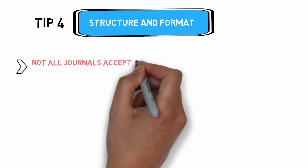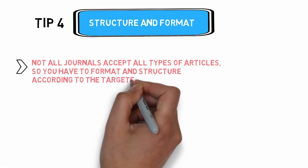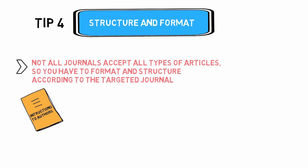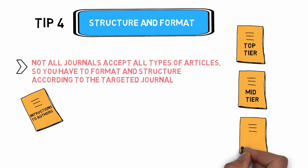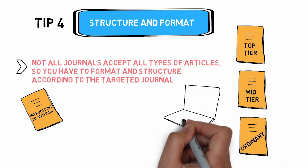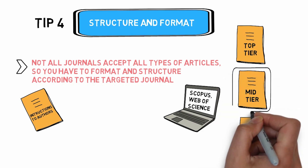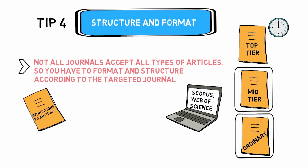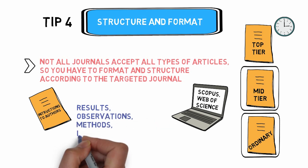Always remember, not all journals accept all types of articles, so you have to format and structure according to the targeted journal. Read carefully the instructions to authors or author guidelines of that particular journal. Internationally, there are commonly three types of journals: top-tier, mid-tier, and ordinary or average journals. You can identify these through databases such as Scopus and Web of Science. If you have not published at all, it is advisable to target mid-tier or ordinary journals — do not waste time chasing top-tier ones, as it takes time to get there.